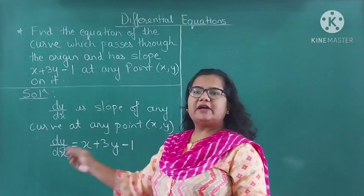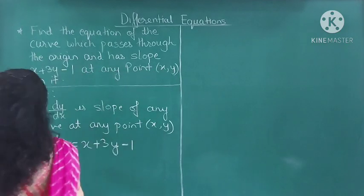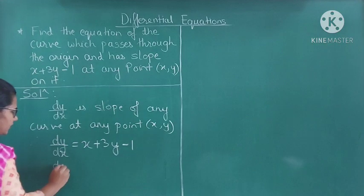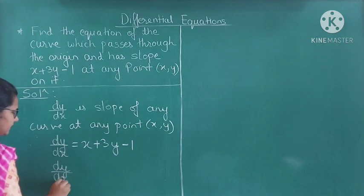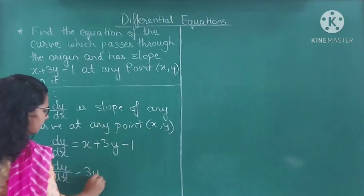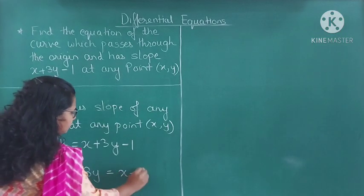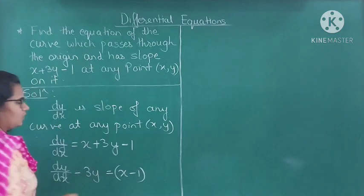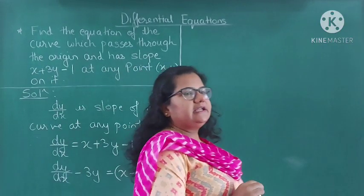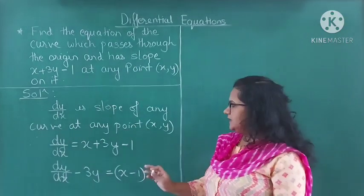I will take the 3y term to the left side. So the equation will become: dy/dx minus 3y is equal to x minus 1. So what do you observe here? Is this a linear differential equation? Yes.